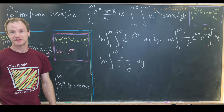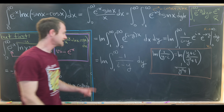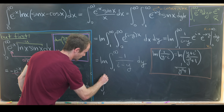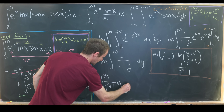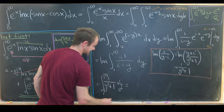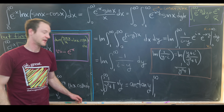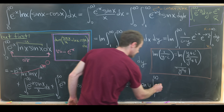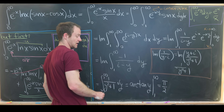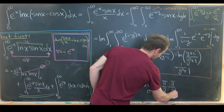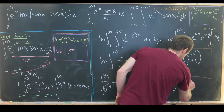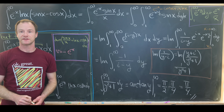So we have the imaginary part of the integral from one to infinity of minus one over i minus y dy. To find the imaginary part, since y is real, we need the imaginary part of one over y minus i. Multiplying numerator and denominator by the conjugate gives us y plus i over y squared plus one. Since y is real, the imaginary part is simply one over y squared plus one.